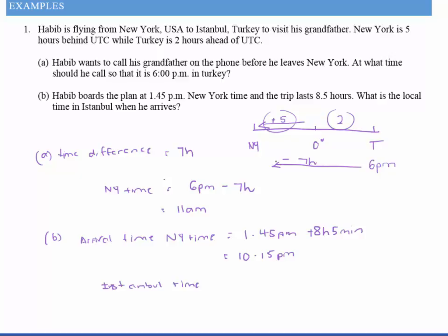Going from New York in the easterly direction we're going to be adding on time. So it's 10:15 p.m. and we're going to add on seven hours, which gives us 5:15 a.m. the next day. Because at 10:15 p.m., if we add on just two hours it becomes 12:15 a.m. — that's already the next day — and then we're adding on more time. So you need to be very aware of whether we are going into another day or not.